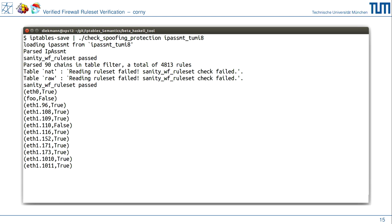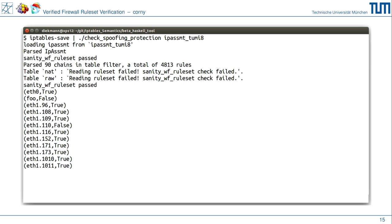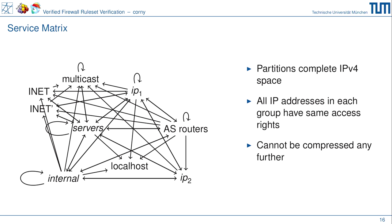Unser überprüftes Tool überprüft, ob unsere Firewall wirklich Spoofing-Protection macht. Als kurzen Ausblick: was wir sonst noch in unserem verifizierten Toolset haben — ihr habt gesehen, wie groß diese Firewall war: 4800 Regeln, inzwischen über 5000. Da stellt sich die Frage: Wer darf SSH-Verbindungen aufbauen in einem Ruleset mit 5000 Regeln? Die Antwort ist ein Graph: all diese IP-Bereiche sind interne Server, die einem kompletten internen Adressraum entsprechen, und die Edges geben an, welche Verbindungen ermöglicht sind.